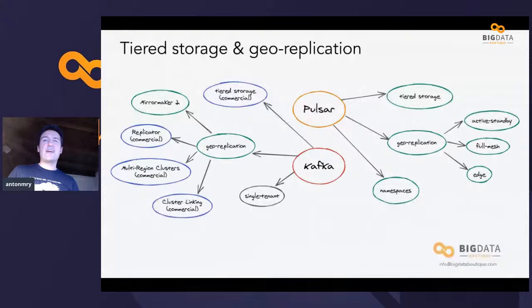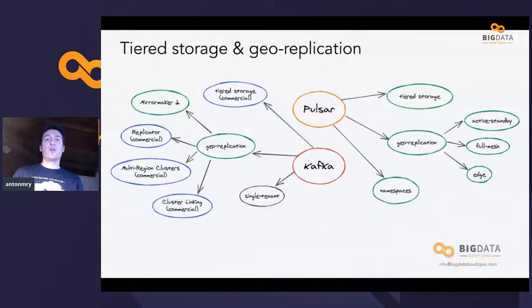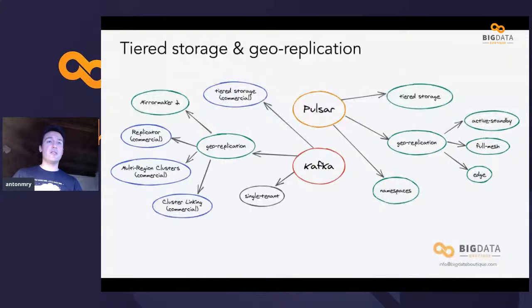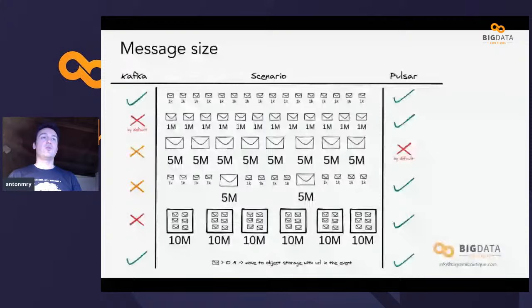For very large files, neither Kafka nor Pulsar is ideal — they're not designed for that. The typical pattern I recommend is to write the large file to object storage, retrieve the URL, and send that URL in the message to Kafka or Pulsar. This keeps your event-driven architecture intact without putting data the broker doesn't like into it. It scales much better, though this approach depends on the use case and isn't always possible.